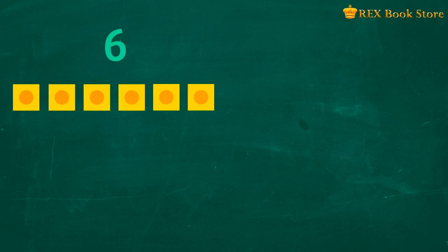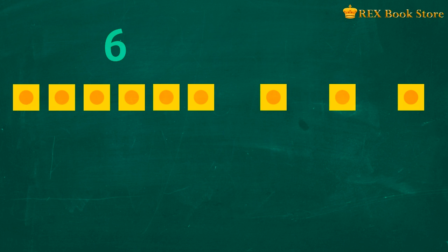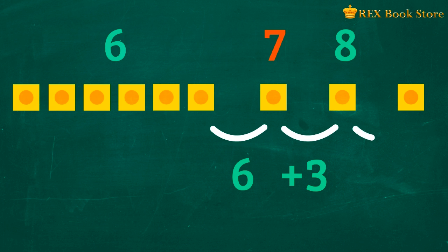Let's try it again. There are six units here and another three here. Six plus three is how many? Let's count on. Six, seven, eight, nine. We counted on three times. So we say six and three make nine. Six plus three equals nine. There are nine units altogether.